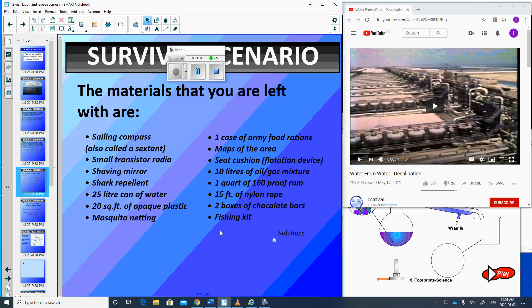Here are the 15 items, and I will show you the right answers according to the Coast Guard at the end of the video. But maybe even just write these down in order on a piece of paper. You've got a sailing compass, a transistor radio, a shaving mirror, shark repellent, 25 litre can of water, 20 square feet of plastic, mosquito netting.